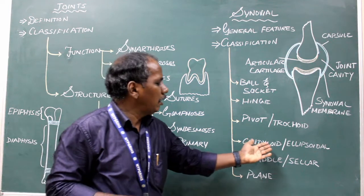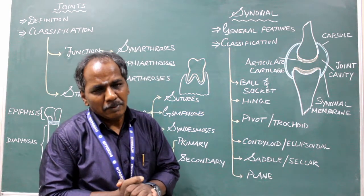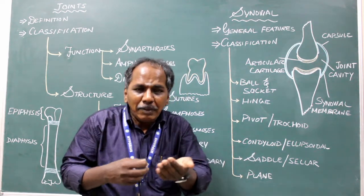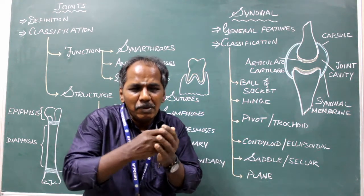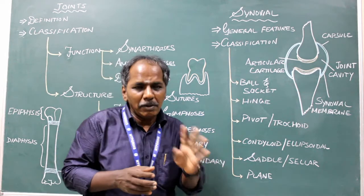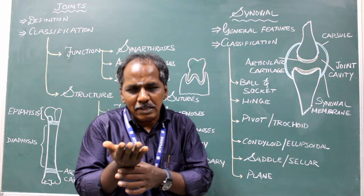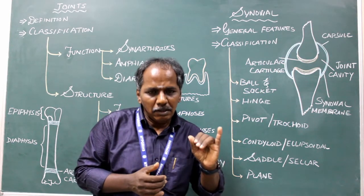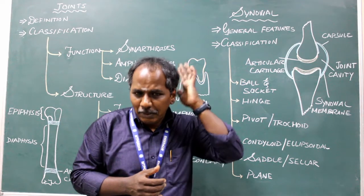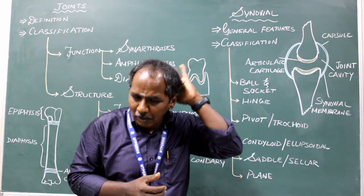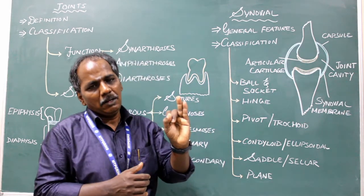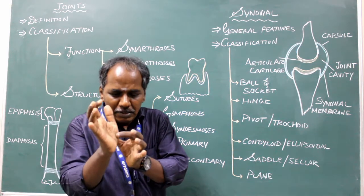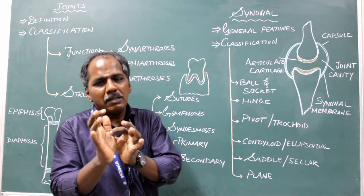Condyloid or ellipsoidal variety. In this type of joint, the condyle of one bone articulates into the elliptical surface of another bone. Four movements are possible: flexion, extension, and side-to-side movement. Examples: wrist joint, atlanto-occipital joint (between the first cervical vertebra and the occipital bone), and the first metacarpophalangeal joint.